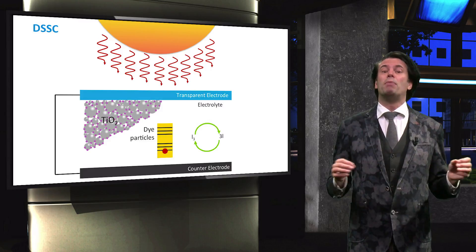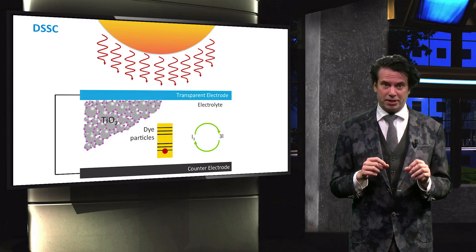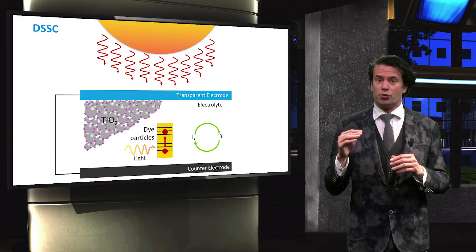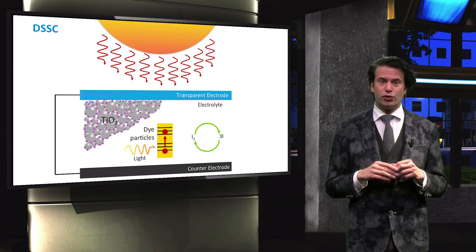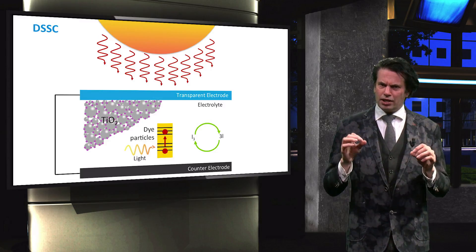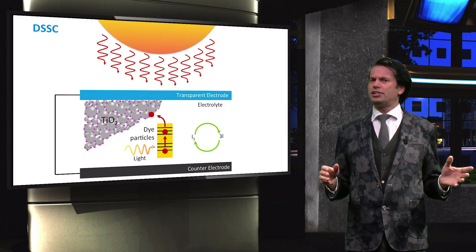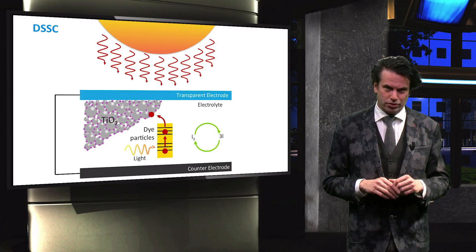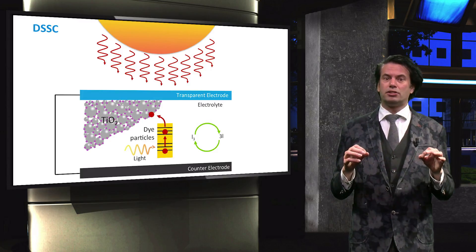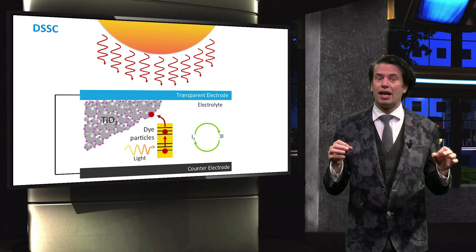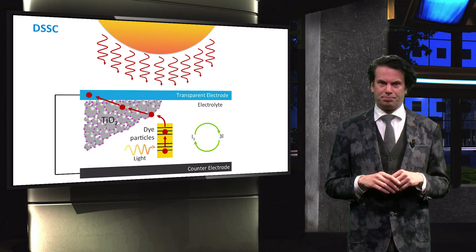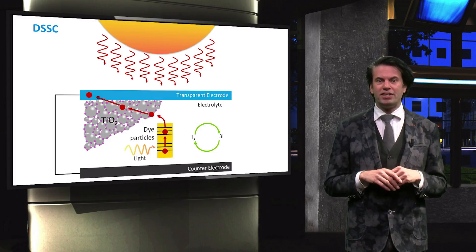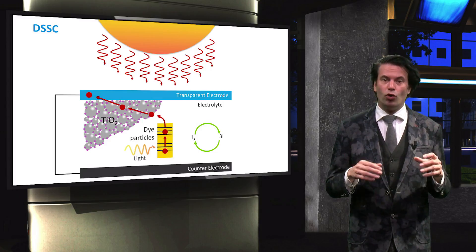If a photon is absorbed by the ruthenium polypyridine, it can excite an electron from its ground state, referred to as S, to an excited state, referred to as S*. The light-excited electrons are injected into the titanium oxide nanoparticles. The photosensitizer molecule remains as a positively charged entity. The electrons in the titanium oxide move to the TCO-based contact; the mechanism of this electron transport is based on diffusion.